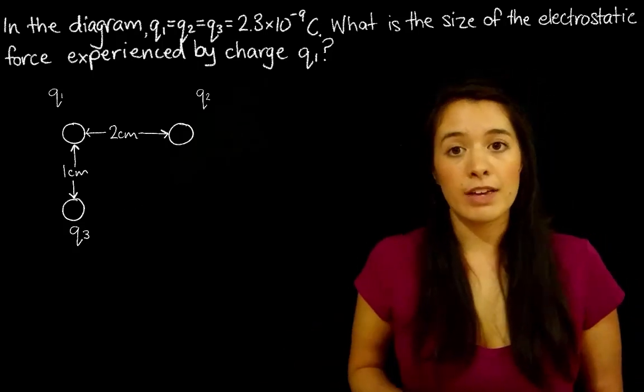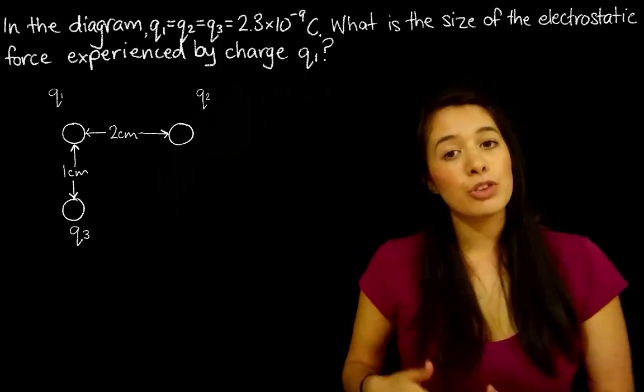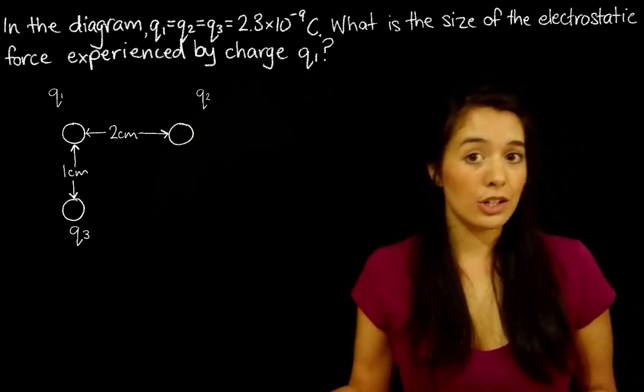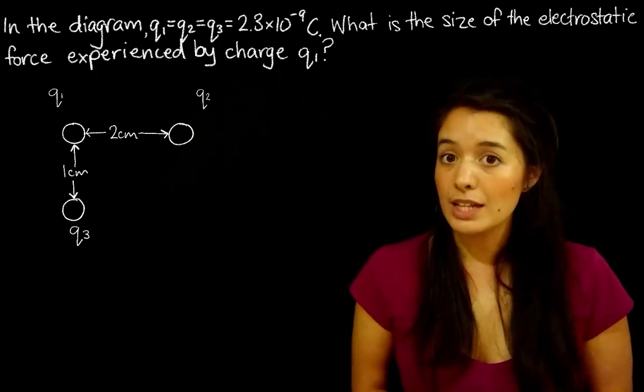All of the charges have equal magnitude, right? It says that in the question. And the fact that Q3 is closer to Q1 than Q2 means it's going to be having a stronger force on it. So that's the first thing.